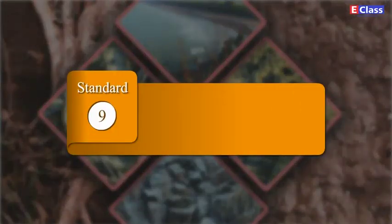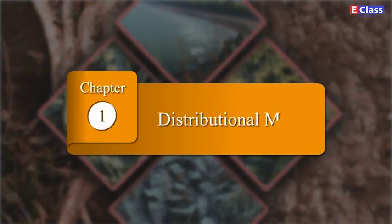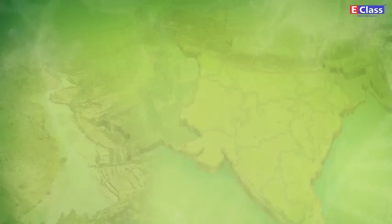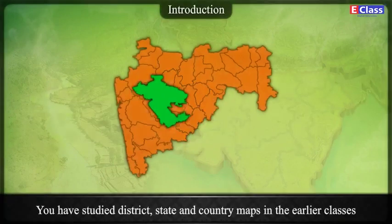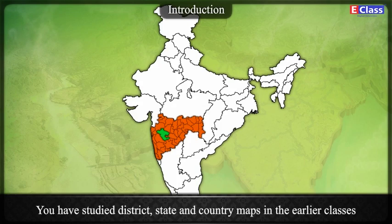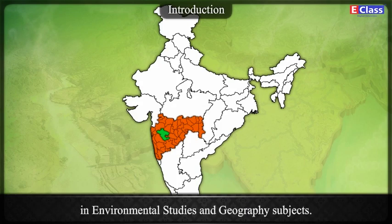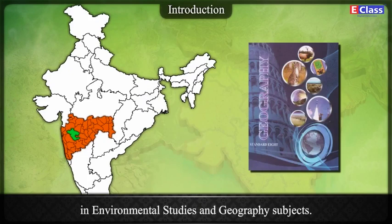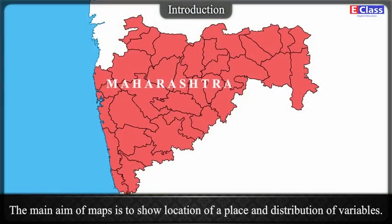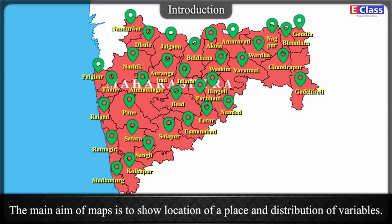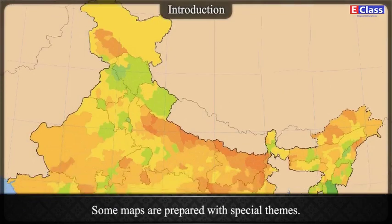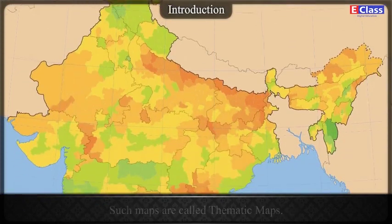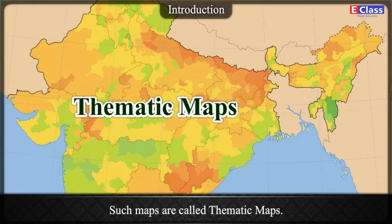Standard 9 Geography Chapter 1: Distributional Maps. Introduction: You have studied district, state and country maps in earlier classes in environmental studies and geography subjects. The main aim of maps is to show the location of a place and distribution of variables. Some maps are prepared with special themes. Such maps are called thematic maps.